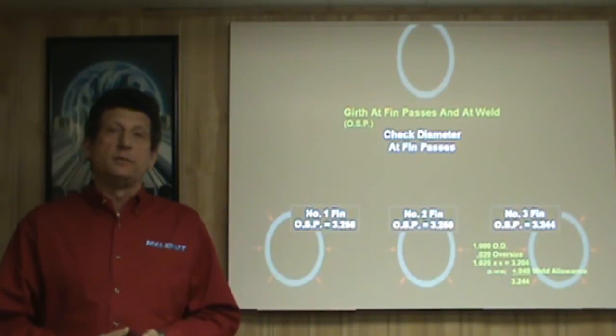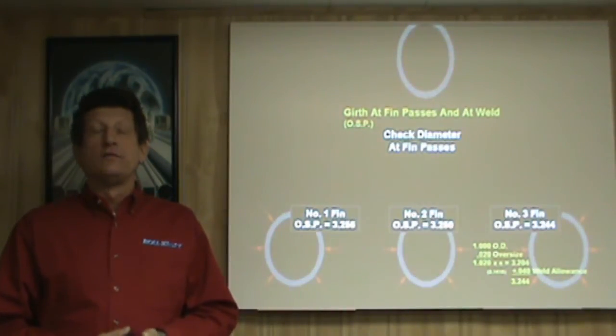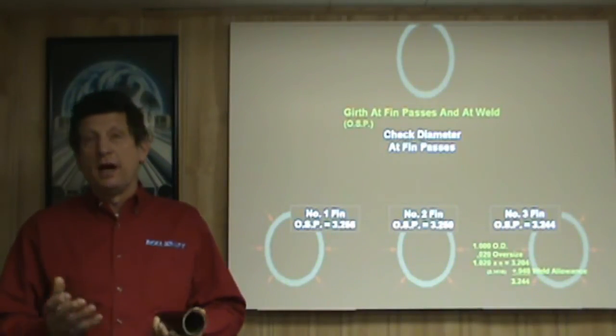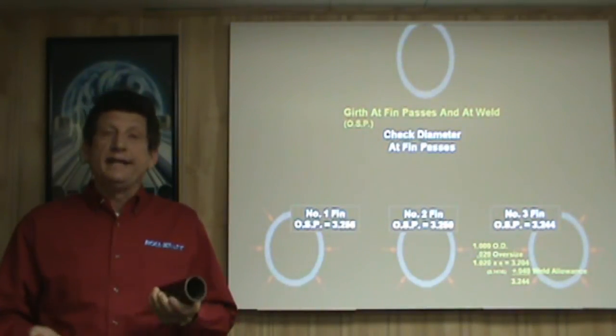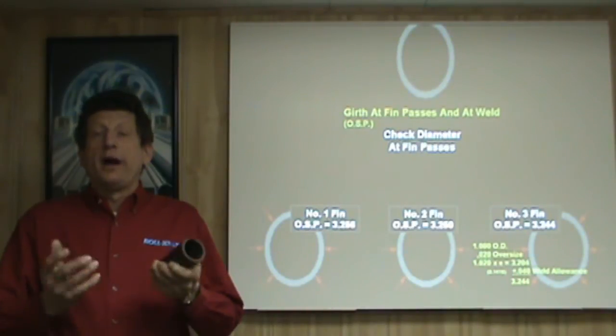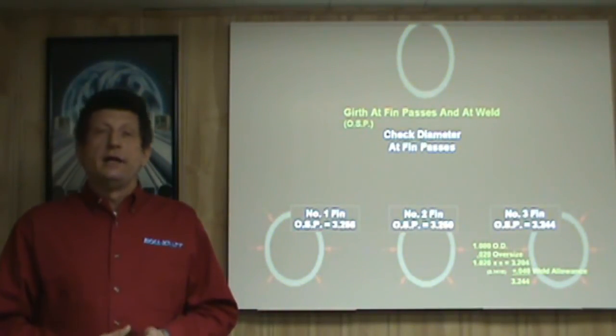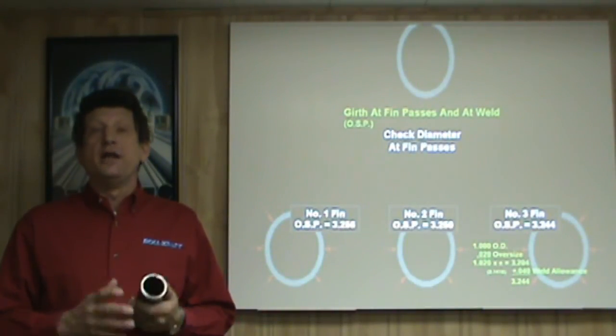But there's many other variables that must be considered as well. For example, the type of material - is it stainless, is it mild steel? What's the gauge? Lighter gauge will require a wider strip width, heavier gauge will require a narrower strip width.